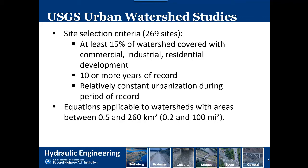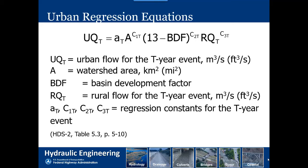Most urban equations are applicable to watersheds with areas between 0.2 and 100 square miles; some go up to 500 or even 1,000 square miles. Always check the limitations. The urban regression equation is similar to the rural one except it includes a BDF factor — the Basin Development Factor — and modified coefficients C1T, C2T, C3T found in HDS-2. It takes the rural discharge raised to some coefficient and incorporates the basin development factor.